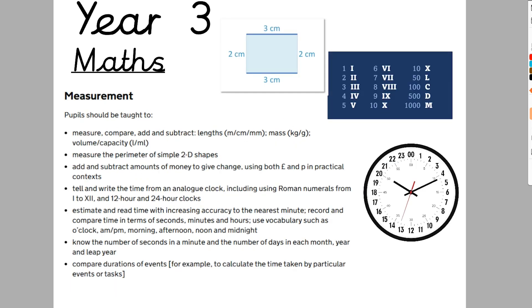Measurement introduces some new and quite tricky concepts. Roman numerals come up in year three, as does the 24-hour clock, which is really hard to grasp. The concept of perimeter also comes up — only in the context of simple shapes like a rectangle — perimeter being the distance around the edge of the shape. To work it out you add the sides: 2 + 3 + 2 + 3. So the big other things in measurement are Roman numerals, perimeter, and 24-hour clock.